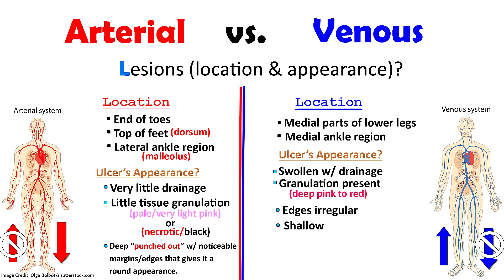Now let's compare that to a venous ulcer, also called a venous stasis ulcer. With venous ulcers, there's an issue with the venous system — the veins are either damaged or the valves of the veins are overstretched and can't help drain blood back to the heart. You get blood pooling and becoming stagnant, typically in the lower extremities, and this causes a lot of swelling.